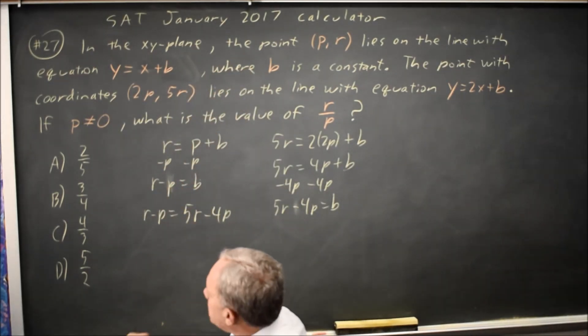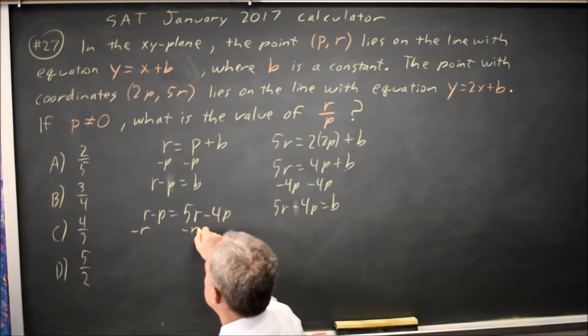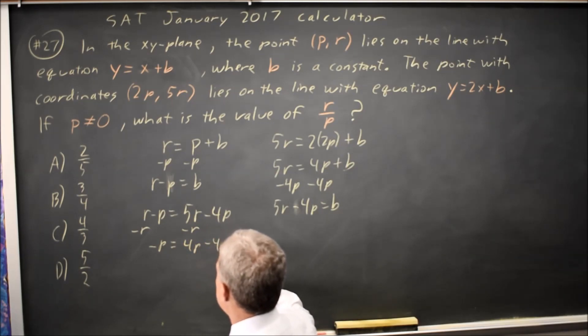As we often do in algebra, I'm going to collect similar terms. Subtract r from both sides, negative p equals 4r minus 4p.